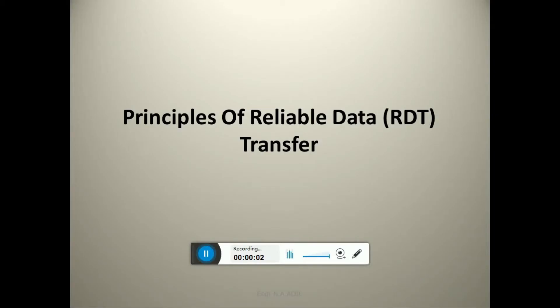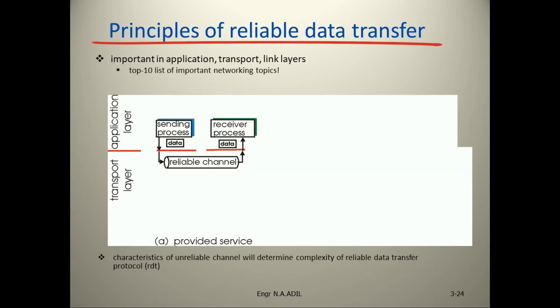Hello viewers, today we will start with the topic of principles of reliable data transfer (RDT), an important application transport link. This is in the top 10 list of important networking topics: the principle of reliable data transfer.